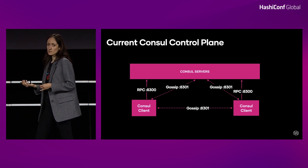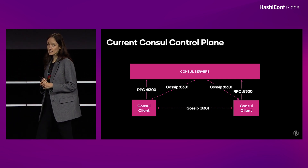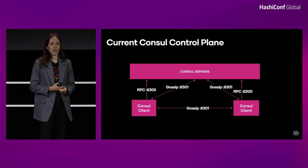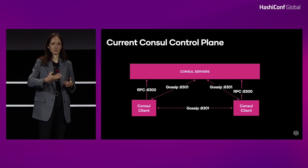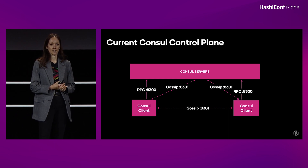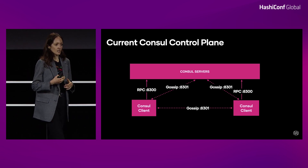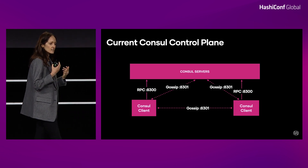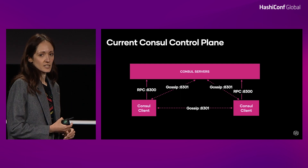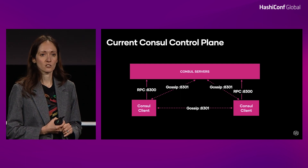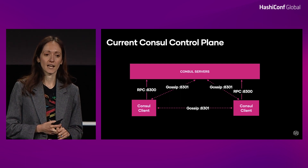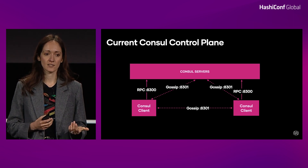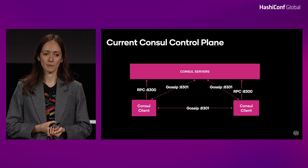For example, if one of the clients goes down, the rest of the cluster will learn through gossip that it's down, and we should stop routing to that client. We use gossip because it allows us to quickly disseminate information within the cluster, which is why Consul is known for its very robust failure detection mechanism.